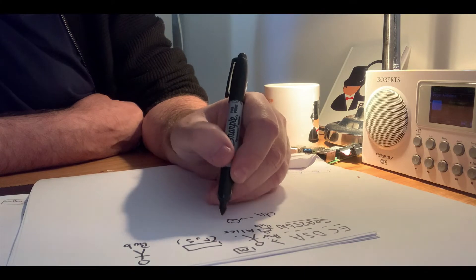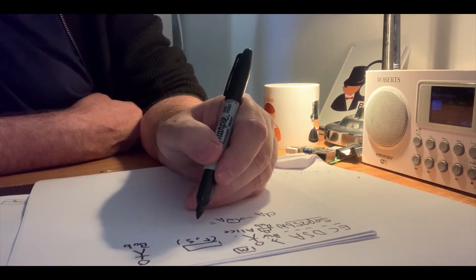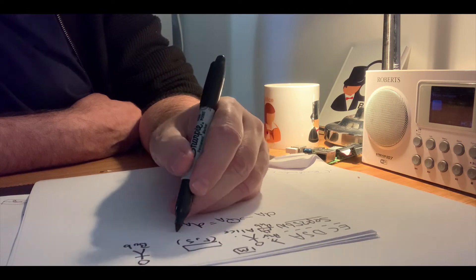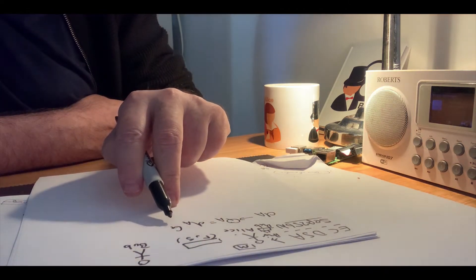She then creates a public key of Qa, which is equal to da times G, where G is the base point on the elliptic curve.